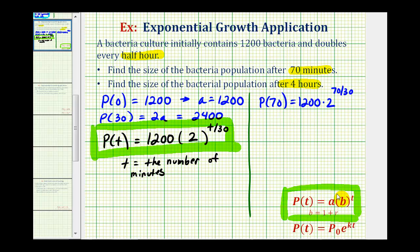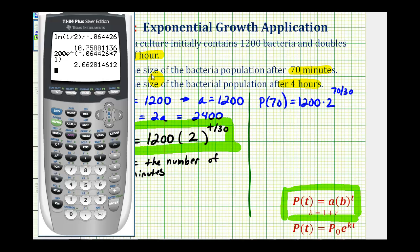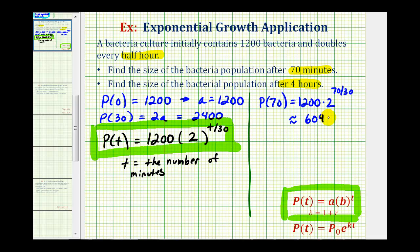Let's evaluate this on the calculator. Okay, 1,200 times two raised to the power of, again, this simplifies to seven-thirds. So if we round to the nearest bacteria, there would be approximately 6,048 bacteria after 70 minutes.